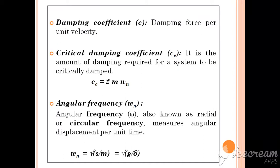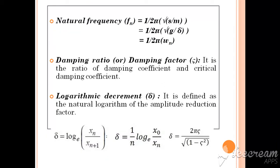ωn can be calculated using the formula: root of S by m, where S is the stiffness of the vibratory object. Also, ωn equals root of G by L, where L is the deflection due to the vibratory motion. Natural frequency Fn equals ωn divided by 2π, giving Fn = (1/2π)·√(S/m) or (1/2π)·√(G/L).